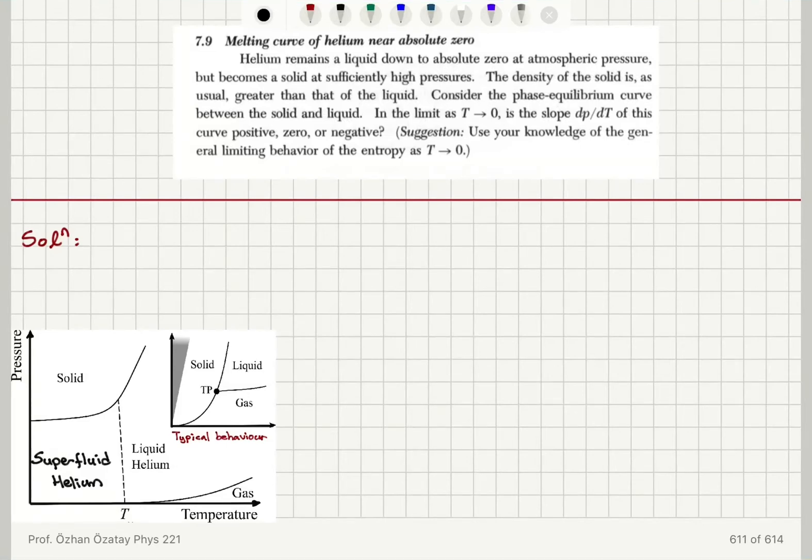Melting curve of helium near absolute zero. Helium remains a liquid down to absolute zero at atmospheric pressure, but becomes a solid at sufficiently high pressures. The density of the solid is as usual greater than that of the liquid.